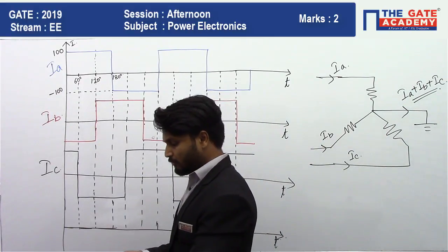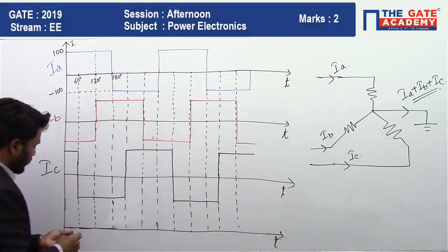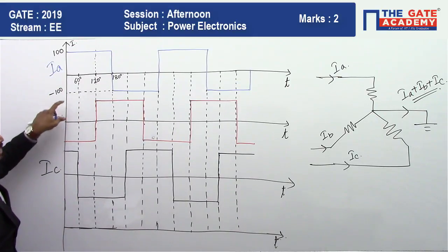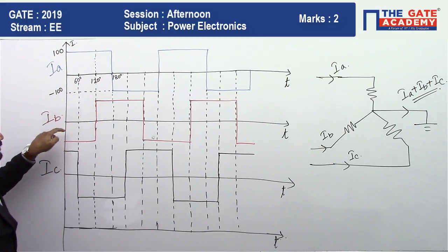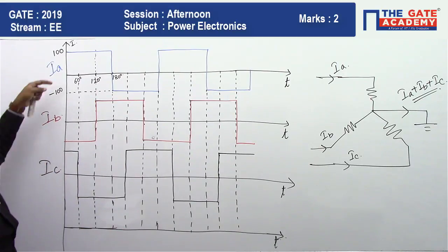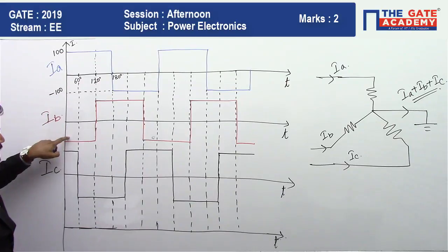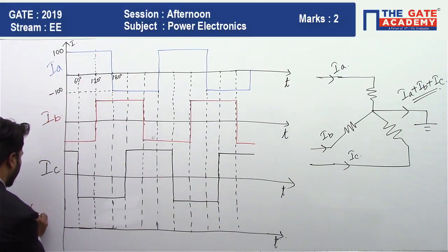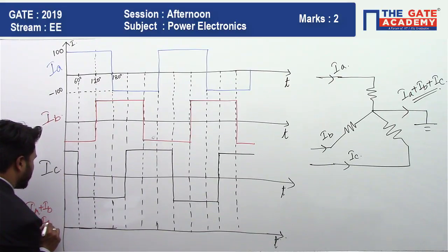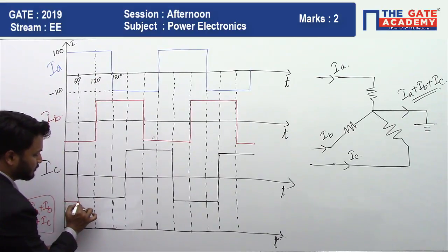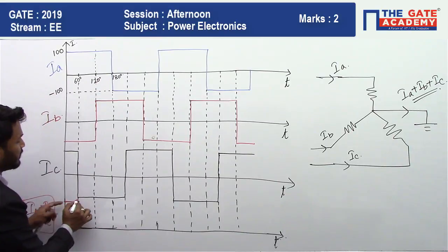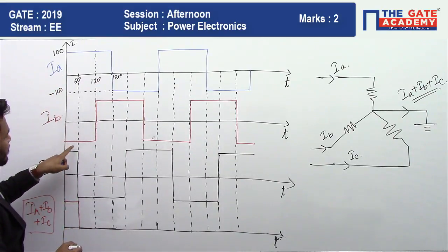So just look at the waveform like this. So Ia plus Ib - see here, Ia is positive 100 and Ib is negative 100. From the waveform, it is clear that Ib is negative 100. What about Ic? Ic is positive 100. So plus 100, minus 100, plus 100. Therefore, Ia plus Ib plus Ic, which we are plotting here, is going to be something like this: plus 100, right? From 0 to 60, it is plus 100.